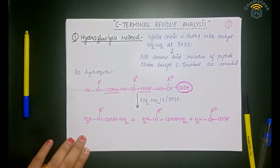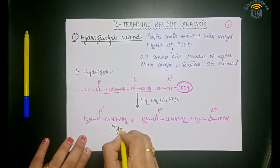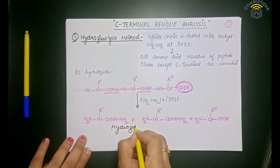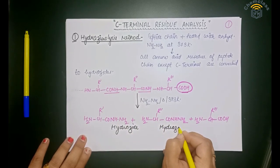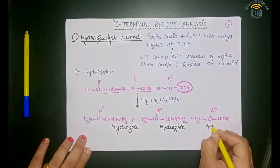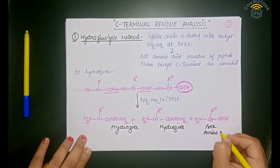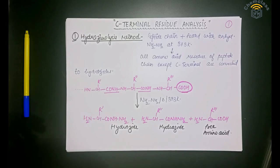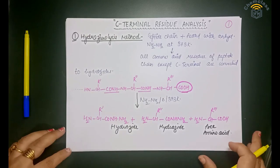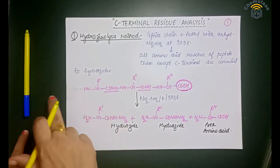The products you see clearly are hydrazides of amino acids, and this free amino acid at the end is the C-terminal residue. This is the first method by which we can determine the C-terminal analysis of a peptide.